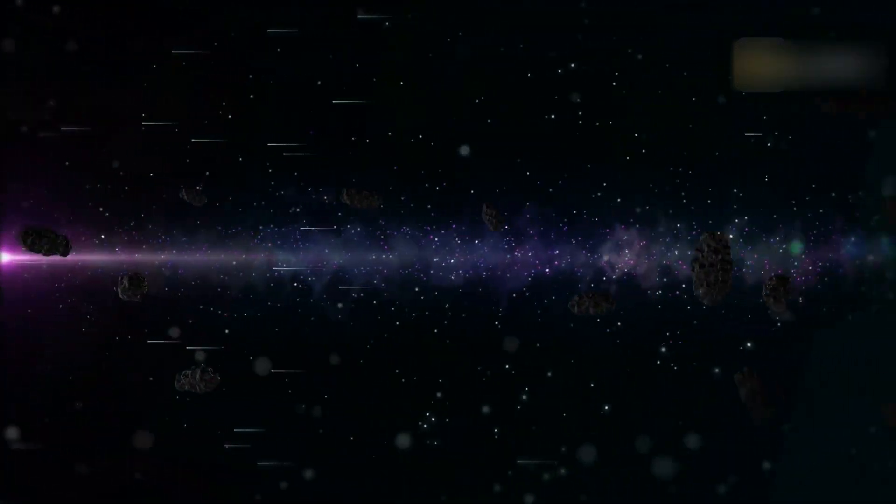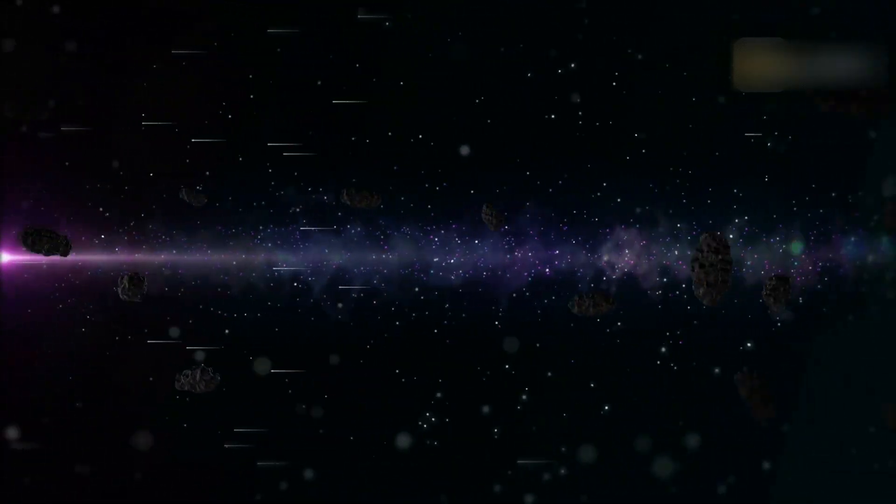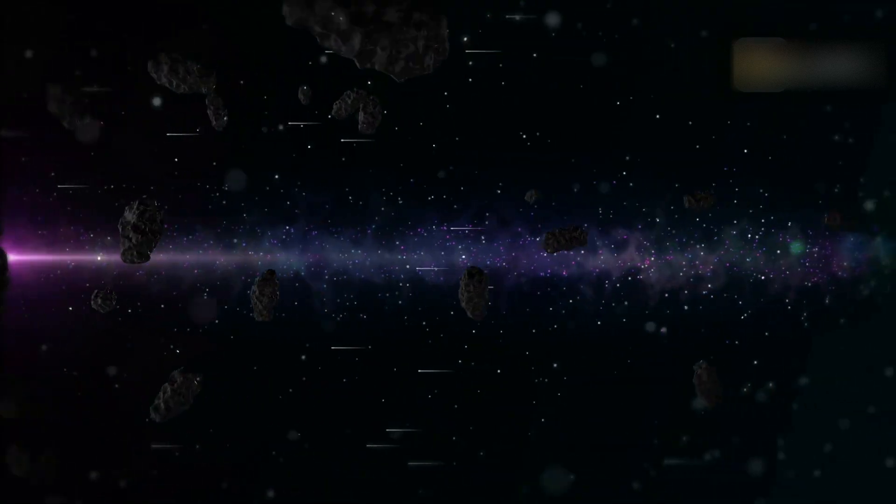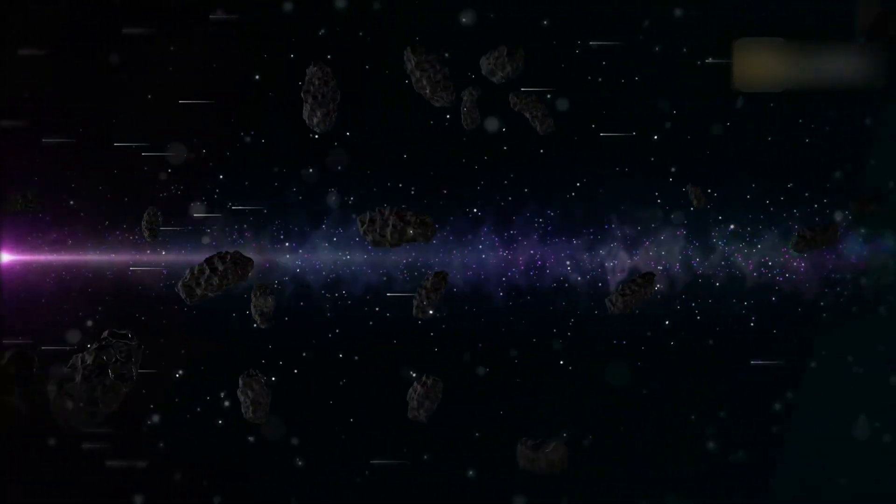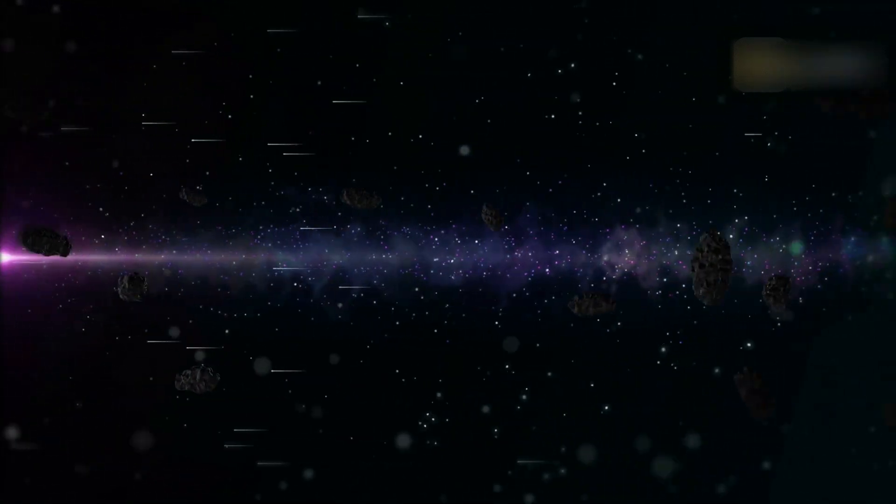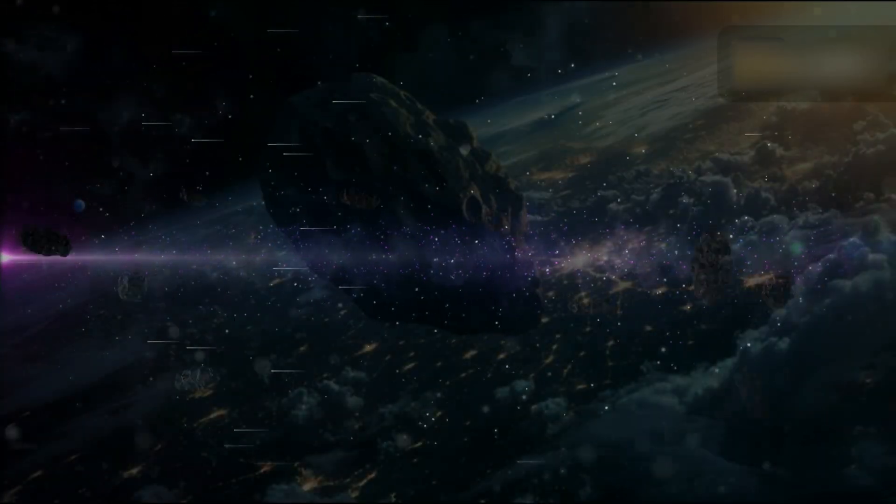Asteroid 2006 OT9 will pass about 9.37 million kilometers from Earth on January 30 at a speed of 9 kilometers per second. The possibility of an asteroid impact on Earth is a serious concern, but current asteroid detection and tracking capabilities and potential mitigation strategies make the risk manageable.